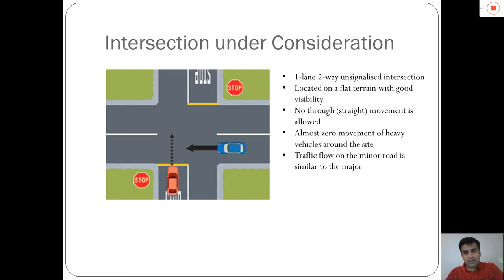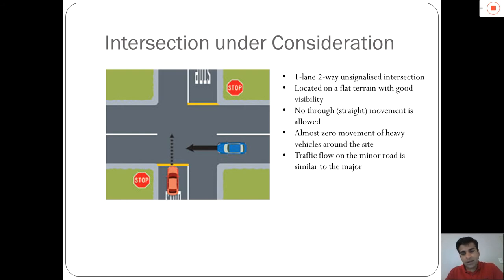The traffic flow on the minor road, which is the vertical road of this intersection or the north-south direction, is pretty similar to the traffic flow that exists on the major stream, which is given by the horizontal road in this diagram — let's call it the east-west direction. In other words, the traffic flow in the north-south direction is pretty similar to the traffic flow on the east-west direction.